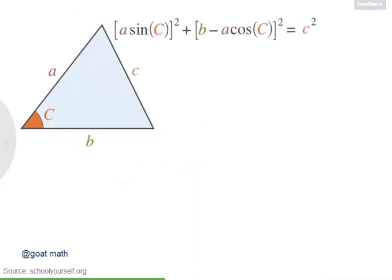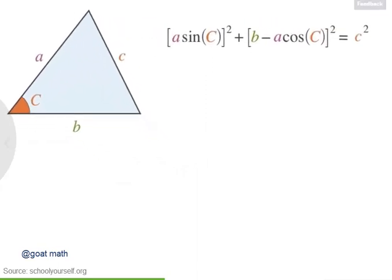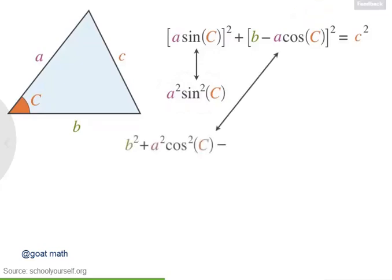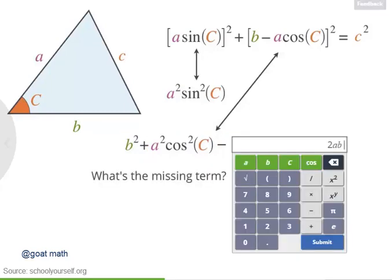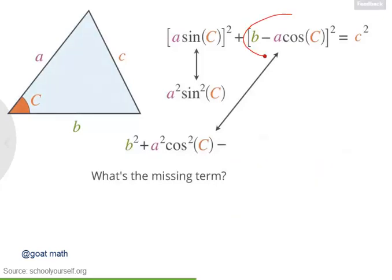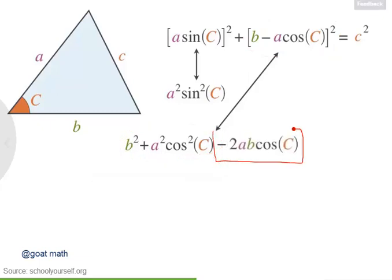So great, we found an expression for side length c. Let's see if we can simplify it a little bit. Squaring a times the sine of c is the same as a squared times sine squared c. And when we expand the square of b minus a times the cosine of c, we actually get three terms: b squared plus a squared times cosine squared c minus 2ab cosine c.